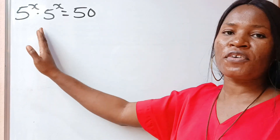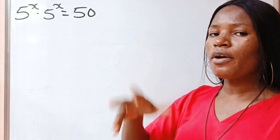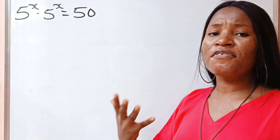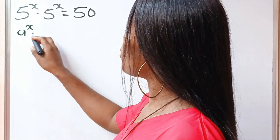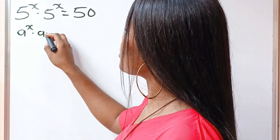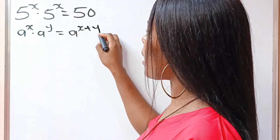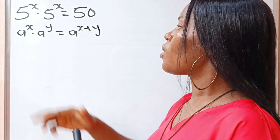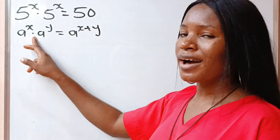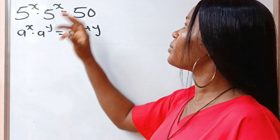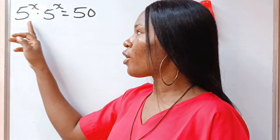Hi everyone, let's solve for the value of x. First, let's recall the law of exponents or indices that states that a to the power of x multiplied by a to the power of y is equal to a to the power of x plus y. Once they share the same base, you pick one base and you add the powers, as long as they are multiplying each other.